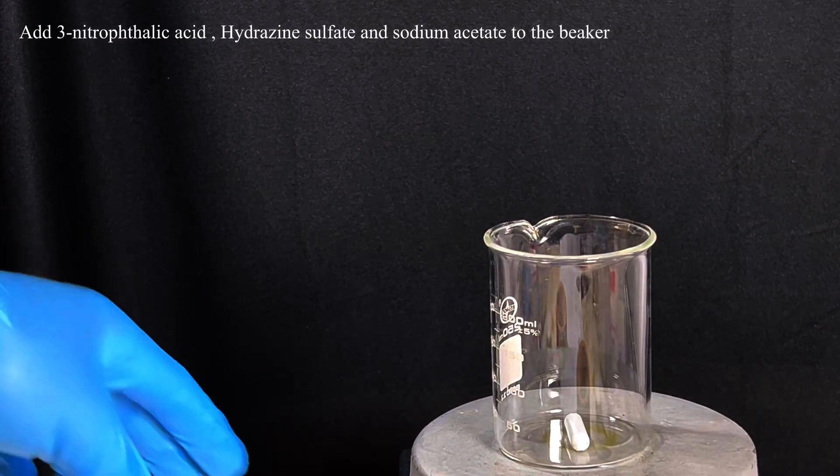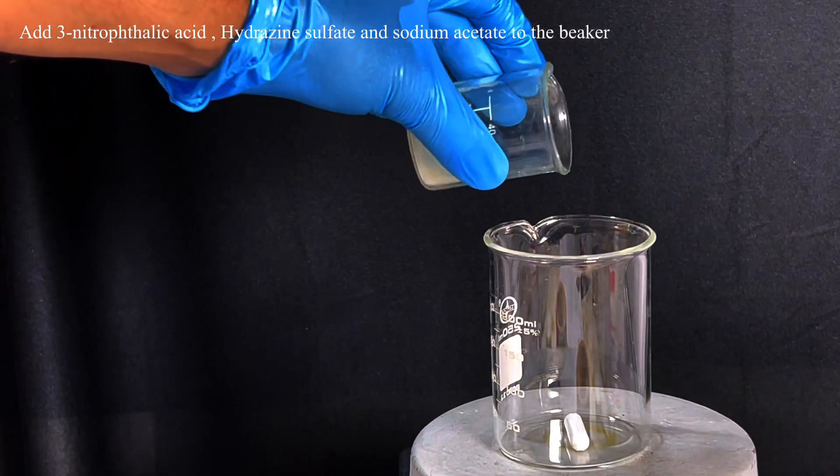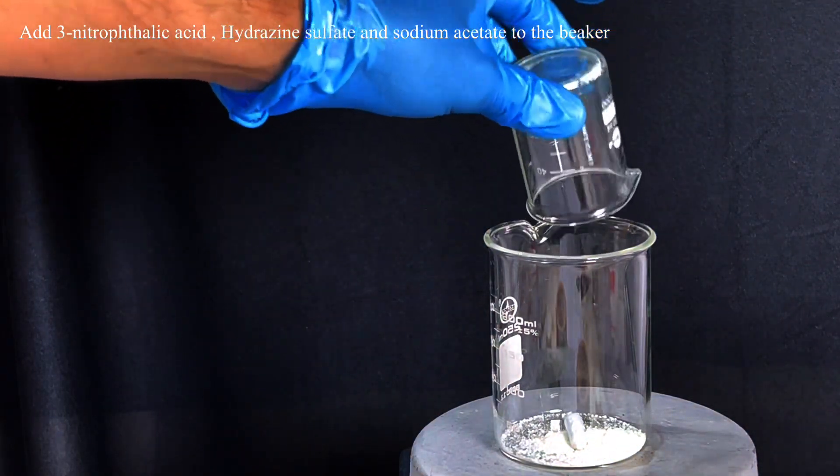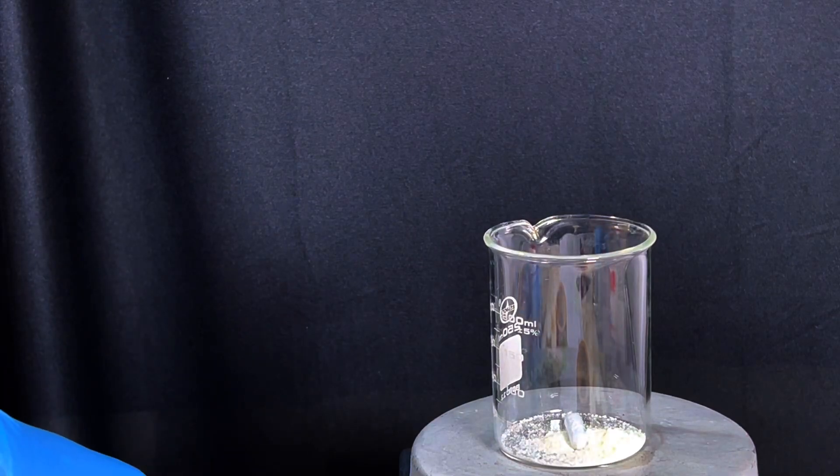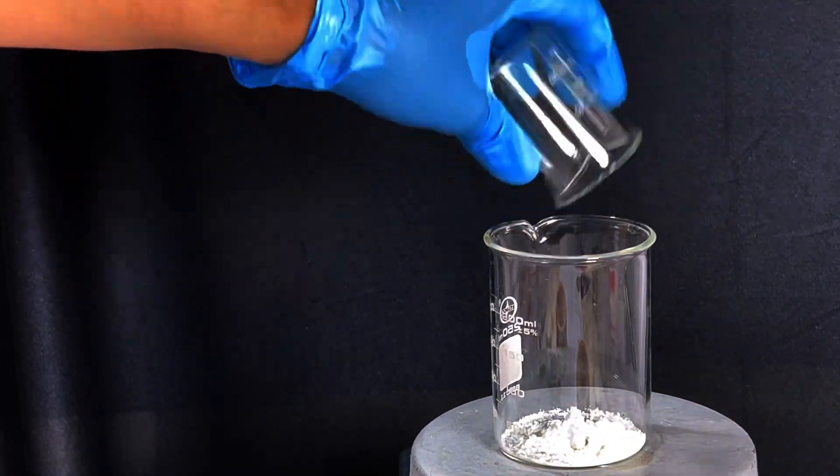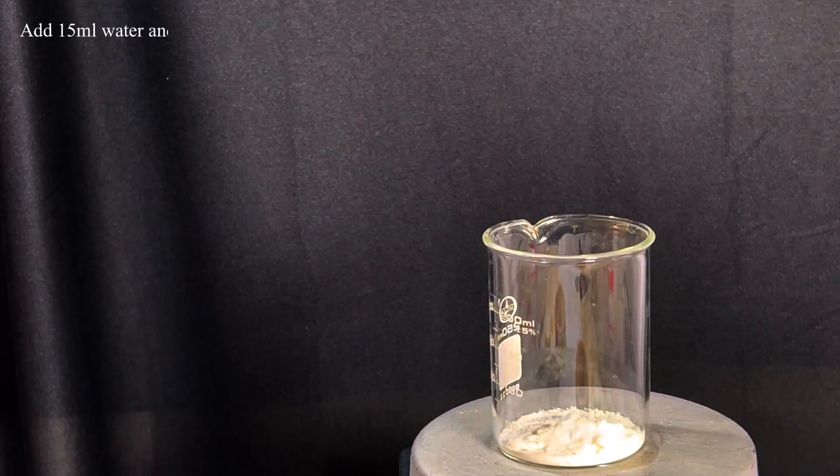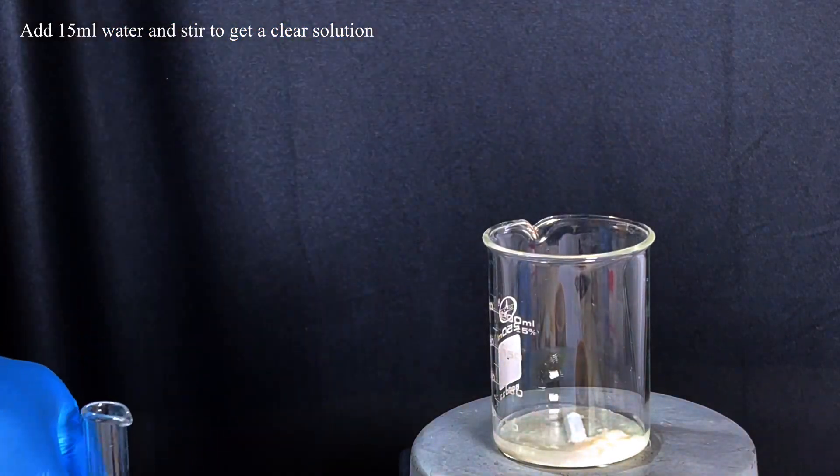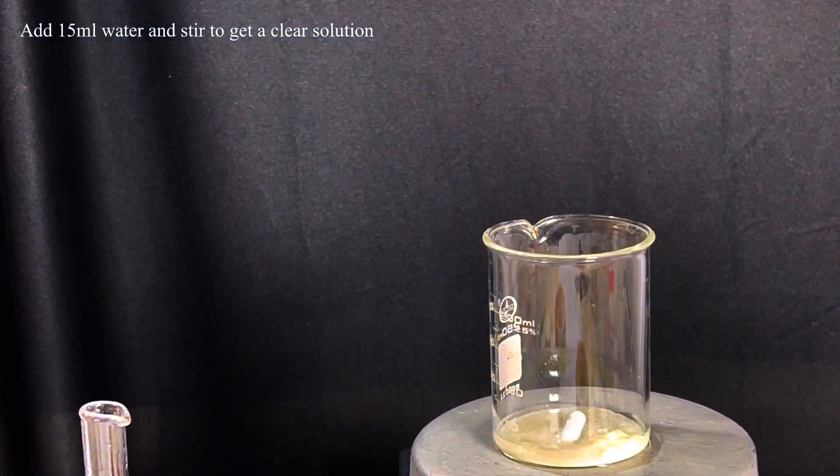Start by taking a 250 milliliter beaker and then add 2.1 grams of 3-nitrophthalic acid, 1.5 grams of hydrazine sulfate, and 2.1 grams of anhydrous sodium acetate. Add around 15 milliliters of water and stir to get a clear solution. You might need to heat up a little to dissolve everything.